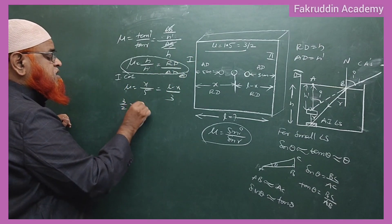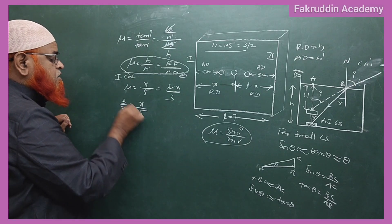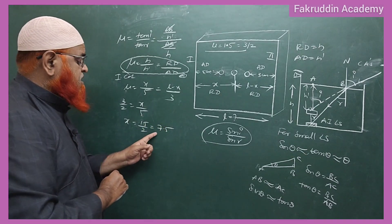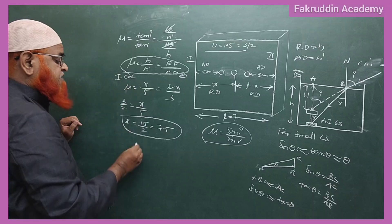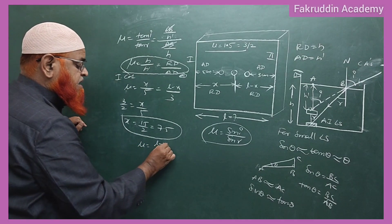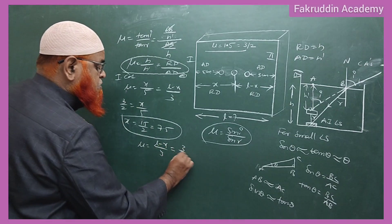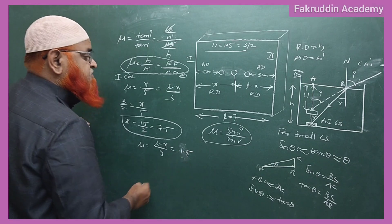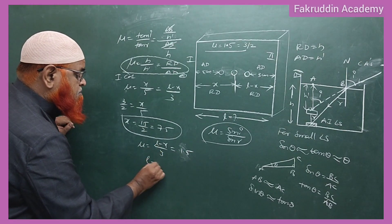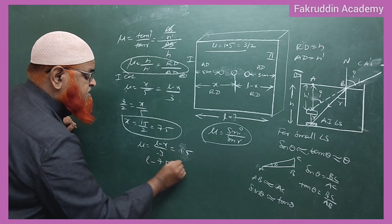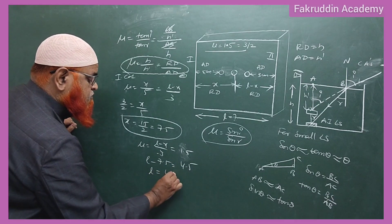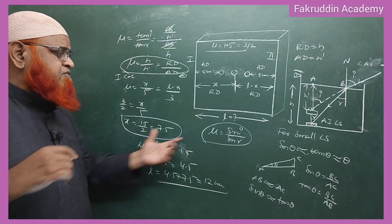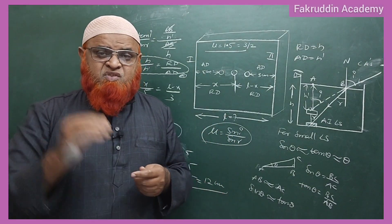So three by two equals x by five, giving x equals 15 by 2, which is 7.5 centimeters. Then mu equals L minus x by three, so three by two equals L minus 7.5 by three, giving L minus 7.5 equals 4.5. Therefore L equals 4.5 plus 7.5, which is 12 centimeters. This is the length of the glass slab.